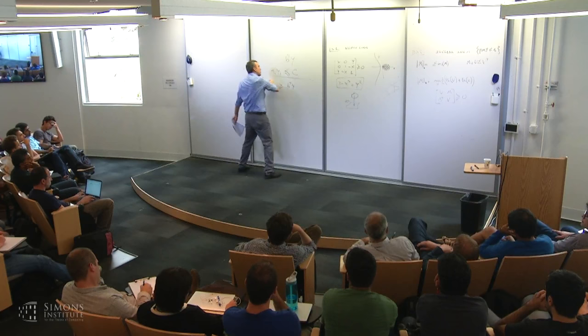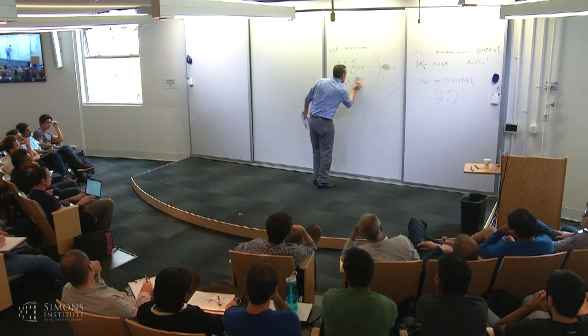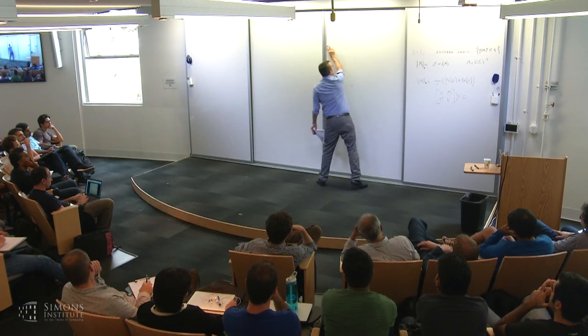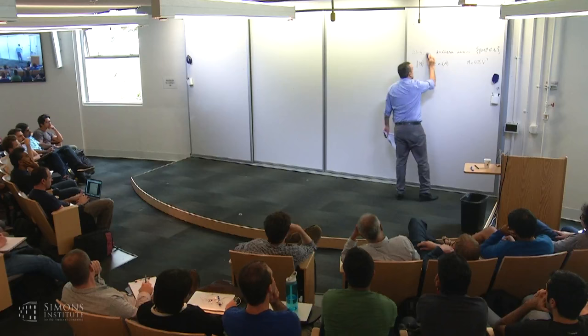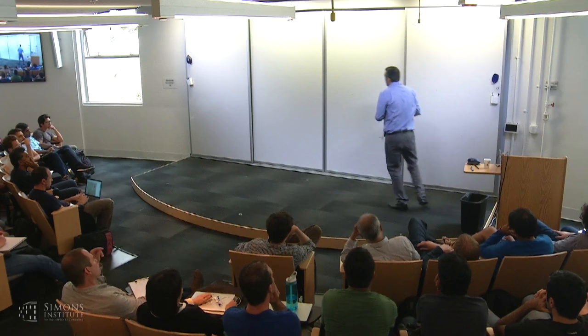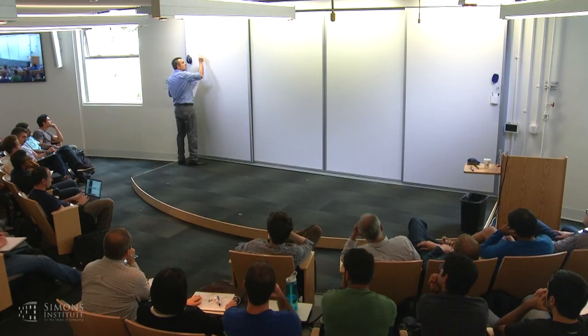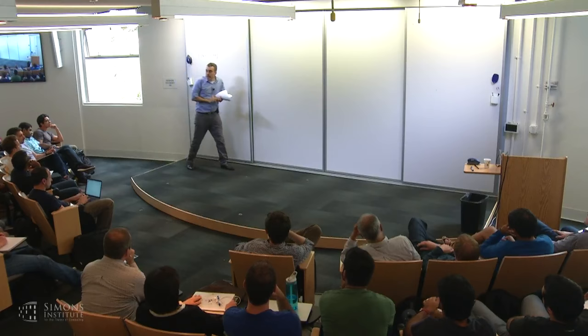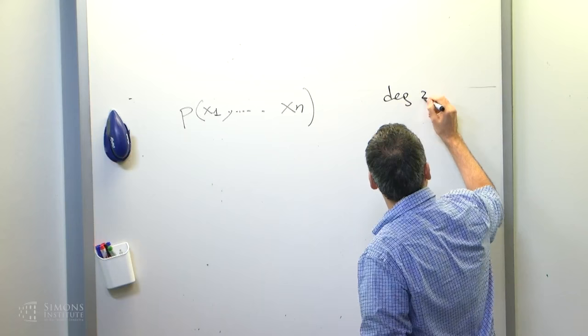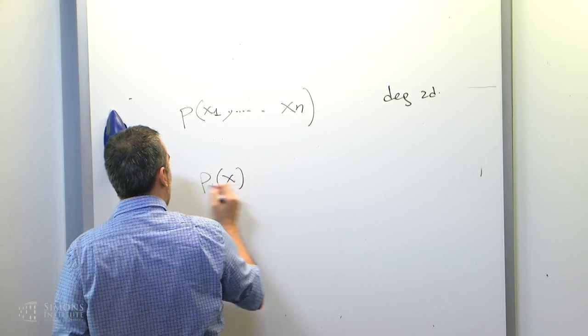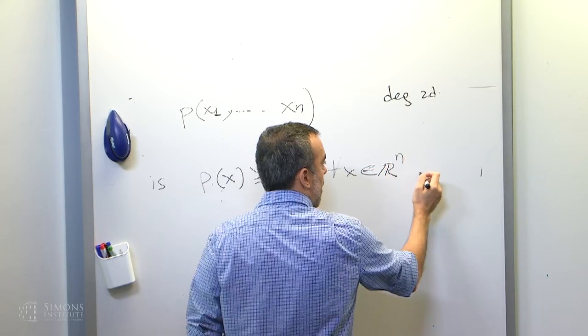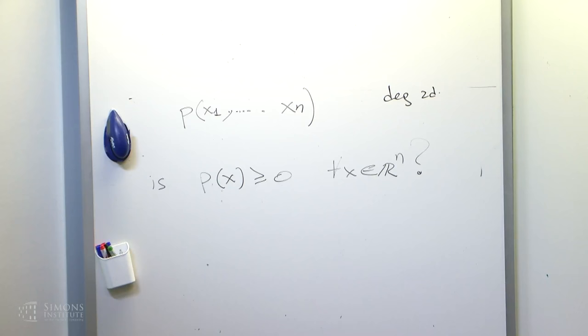So why do we care about sums of squares at all? One very natural question is: given a multivariate polynomial p in n variables of degree d, can we determine whether p is non-negative — that is, whether p(x) ≥ 0 for every x? It's a decision problem about the reals, for every point in R^n.